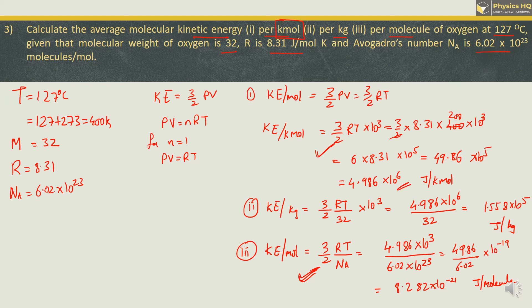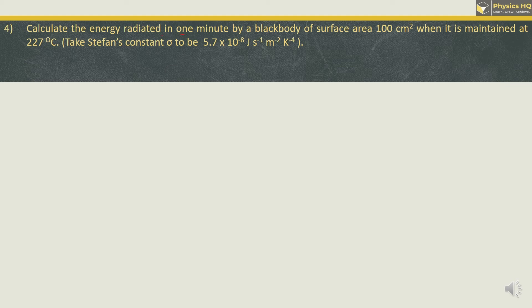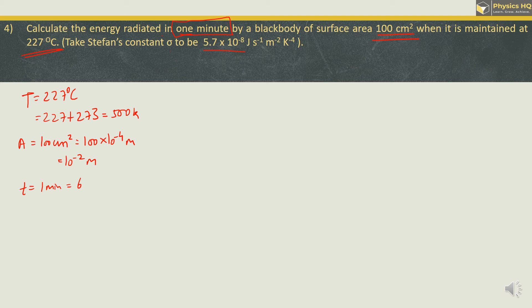Next: Calculate the energy radiated in 1 minute by a black body of surface area 100 cm² maintained at 227°C. Stefan's constant σ = 5.7 × 10⁻⁸. Converting: T = 227 + 273 = 500 K; area = 100 × 10⁻⁴ = 10⁻² m²; time = 60 s.